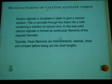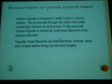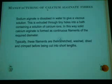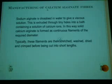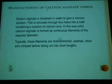Now the manufacturing of calcium alginate fiber. Sodium alginate, which is in the form of powder, is dissolved in water to make a dope solution, which is then extruded through a spinneret into a bath containing calcium ions. In this way solid calcium alginate is formed as a continuous filament of the required diameter. Sodium alginate is soluble in water while calcium alginate is insoluble. Typically these filaments after precipitation are stretched, washed, dried, and cut into shorter lengths.